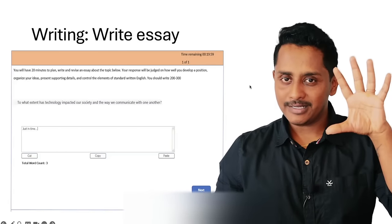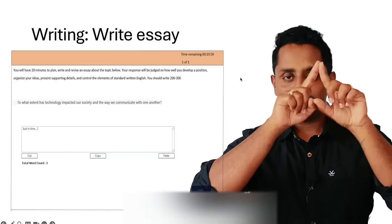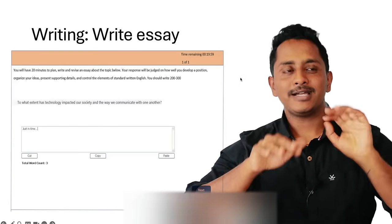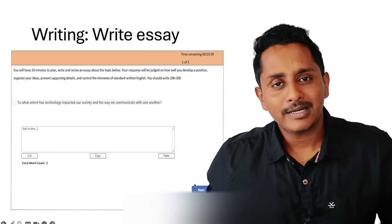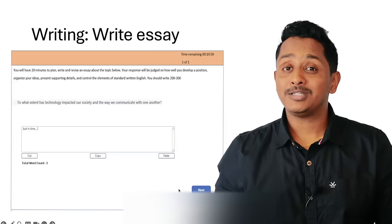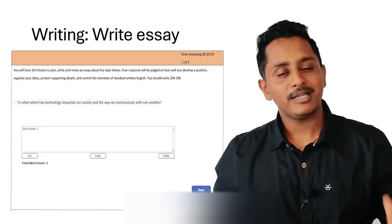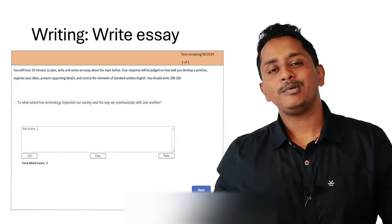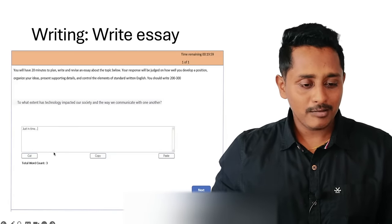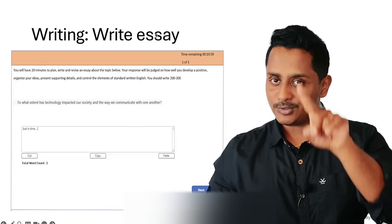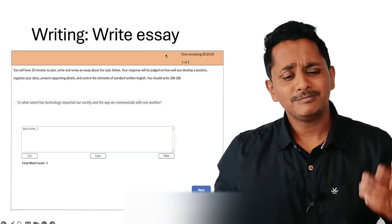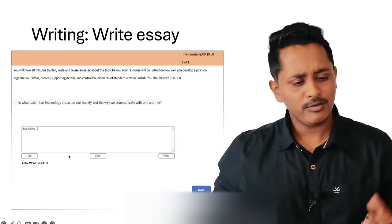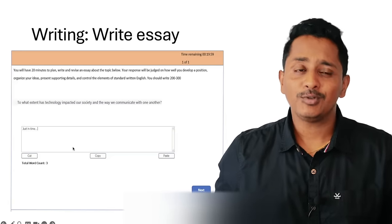Without further delay, let's get right into the video. Let me share my screen. Writing an essay in 2024 looks like this — you will have 20 minutes to write an essay, there will be a question and a box where you need to write. Cut, copy, paste you hardly use. Once done, you click the Next button. If you don't click Next within 20 minutes, the essay will be auto-saved. The timer on the top right shows time remaining, and the word count is also displayed.